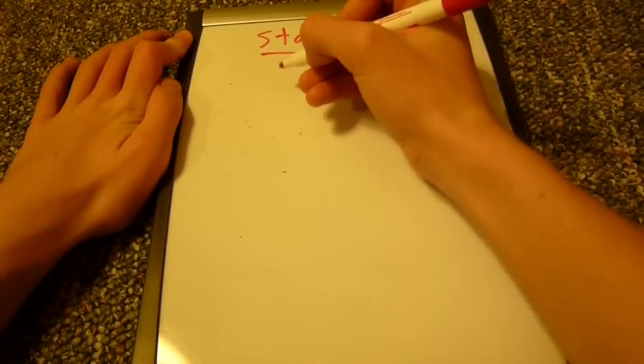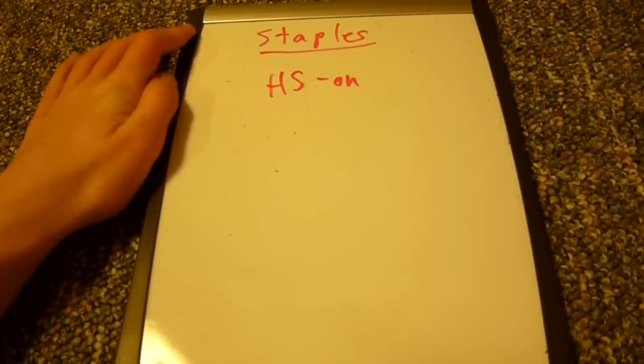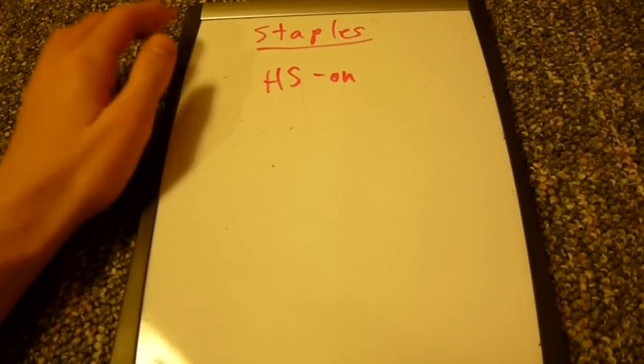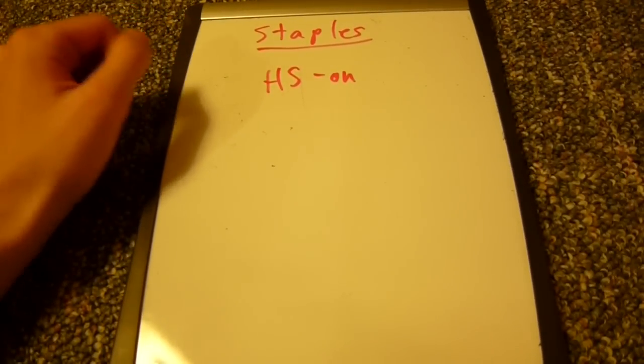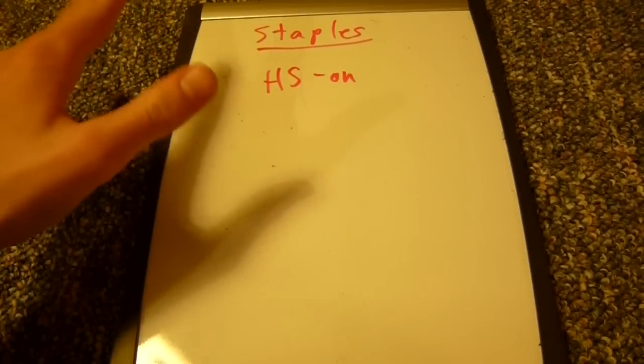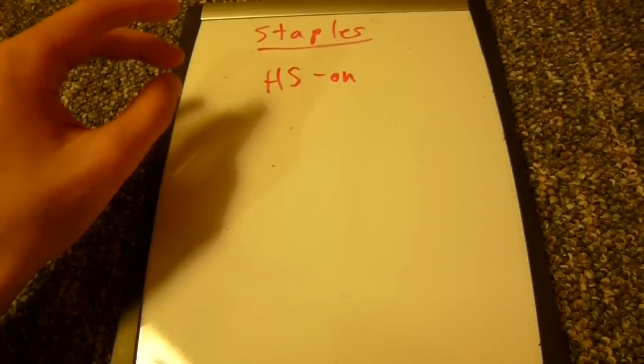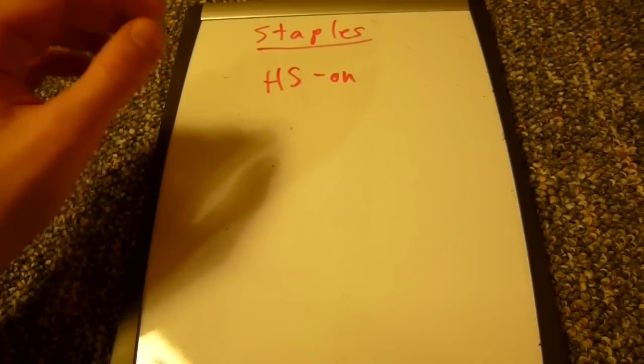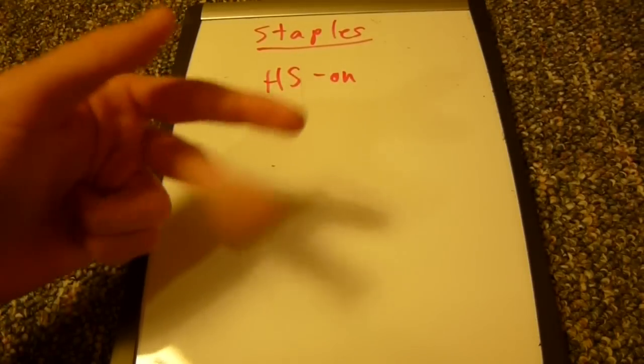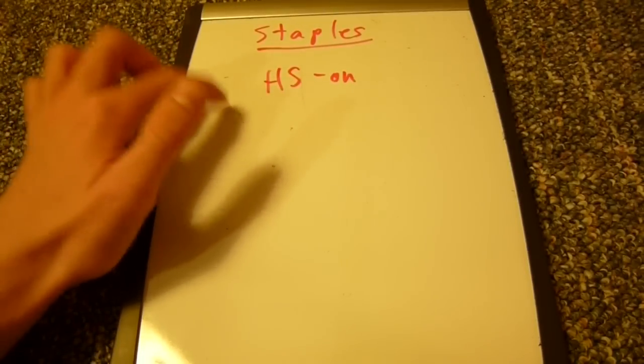But I should mention the current rotation is referred to as HS On. And what this means is that all sets starting with HeartGold SoulSilver, and all the sets newer than that. So, basically, all the HeartGold SoulSilver sets, Call of Legends, and all of the black and white sets, you've got black and white, emerging powers, noble victories, and soon-to-be next destinies, and so on. All those sets are legal currently.